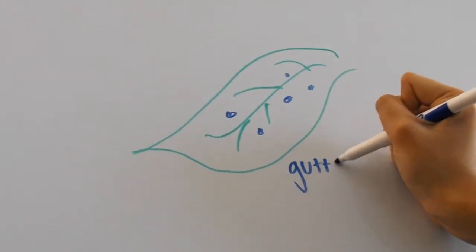Gutation is when you see small water droplets in the morning on the leaves of some plants, and this is caused by root pressure.